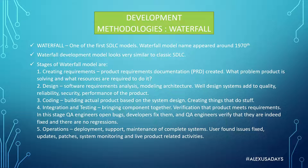The third stage is the coding stage — actually building the product based on the system design and the requirements. It's the stage where you create things that do stuff, so you're actually coding something. The fourth stage is integration and testing. During this stage, all the components are brought together, and verification happens that the product actually meets requirements. Engineers test the code, open bugs, developers fix them, and then QA engineers verify that the bugs are indeed fixed.